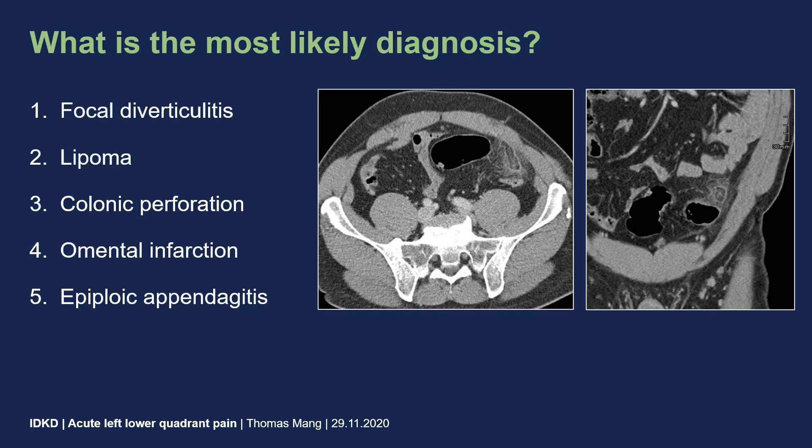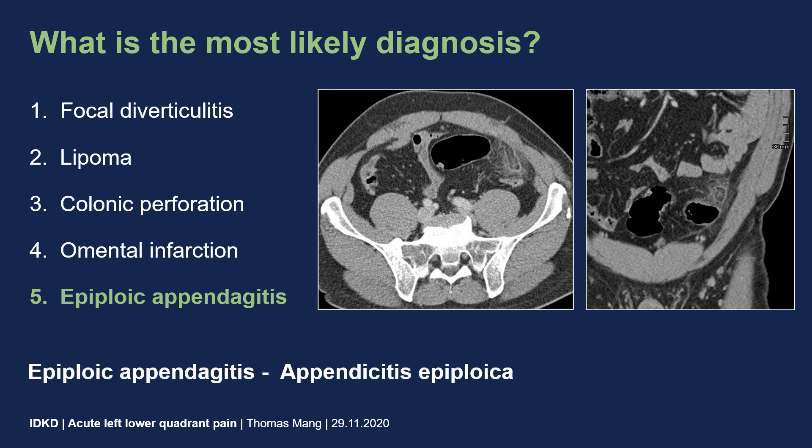So what is the most likely diagnosis? Is it focal diverticulitis, lipoma, colonic perforation, omental infarction, or epiploic appendagitis? The correct answer is epiploic appendagitis, which can also be called appendicitis epiploica.